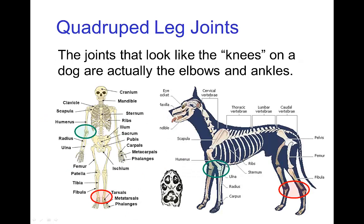For example, for the dog in the front legs, this joint way up near the body of the dog is actually the elbow. And then in the back legs, this joint which is roughly in the middle of the leg is actually the ankle. So although we would expect the knee to be at that position in the middle of the leg, it's actually the ankle back there, which is why the rotation of this joint is opposite from the direction of rotation for a human knee.